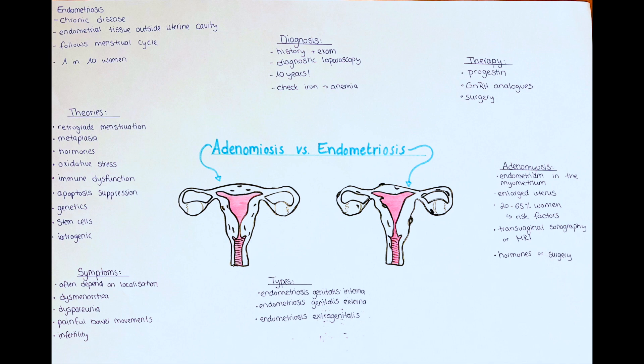Another theory is that endometrial tissue is brought to other places iatrogenically, so during a surgery or medical examination. Another theory is the theory of metaplasia, where it is thought that due to immunologic or hormonal factors, cells that were not supposed to become endometrial tissue change their path of differentiation and eventually turn into endometrial cell aggregates. The next theory is the theory of oxidative stress and inflammation, where immune cells produce cytokines that promote the growth and differentiation of cells into endometrial cells.